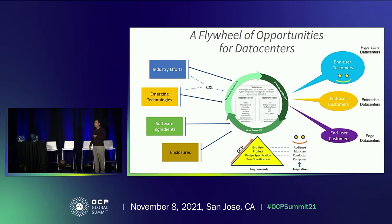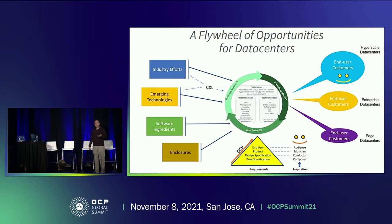OCP normally works on multiple layers of specification. It is very similar to when a composer gets inspiration, a conductor makes an interpretation of that, a musician eventually plays the music, and the audience will enjoy that. The same layer of specification — we're thinking about a base specification, design specification, and eventually products that go into the marketplace, shipped out so that any end users can benefit from that.